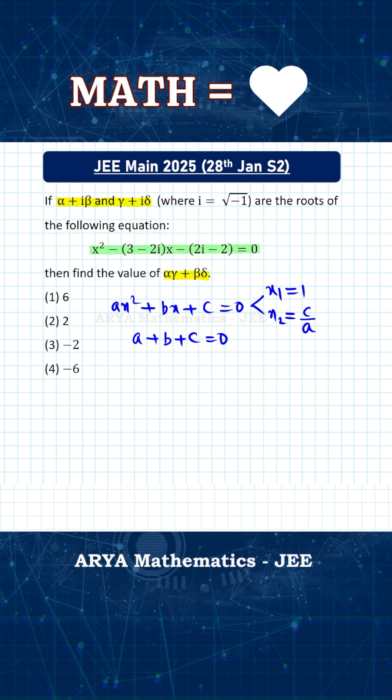Here if you write the given equation, let us rewrite this equation as x square and take minus sign inside. We can write minus 3 plus 2 iota into x and the constant term will become minus 2 iota plus 2 equals to 0. This is the quadratic equation, right? And for this quadratic equation, it is not difficult to see that the sum of coefficients is 0, right? Here constant term minus 2 iota plus 2, 3 minus 2 iota, and coefficient of x square is 1.